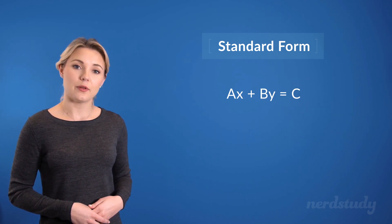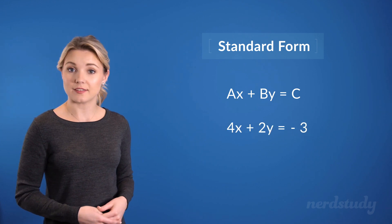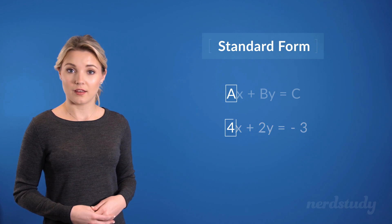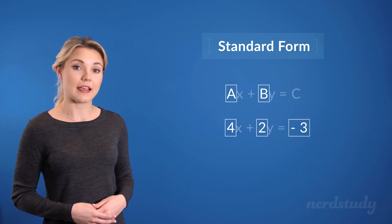An example of a standard form linear equation would look like this. As you can see, the A in this equation is 4, the B is 2, and the negative 3 is C.